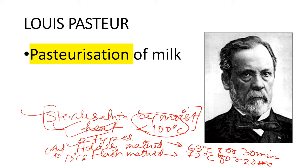The Holder method is 63 degrees Celsius for 30 minutes, and the Flash method is 72 degrees Celsius for 20 seconds, followed by cooling to 13 degrees Celsius. This is about the pasteurization of milk.